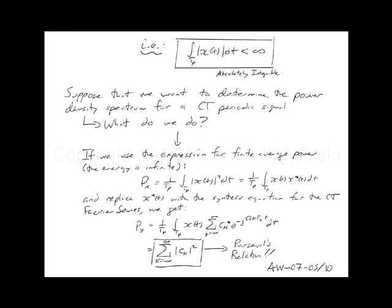Is there an easier way? If we use the definition of the magnitude squared — and x(t) can be complex — the magnitude squared is the product of x(t) with its complex conjugate. If we replace it with the expression for x(t) and plug it into the integral, it turns out Parseval's relation says the power of the signal equals the magnitude squared of the coefficients summed together. You can either integrate the waveform across one period normalized by the period, or sum the squares of the coefficients — either way gives you the exact same answer.